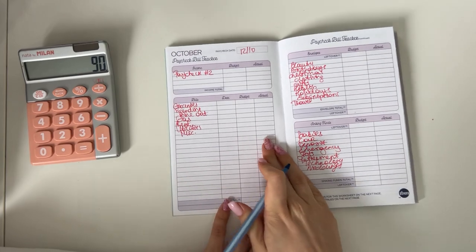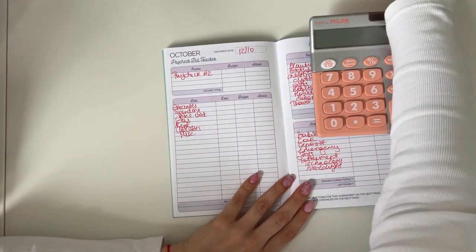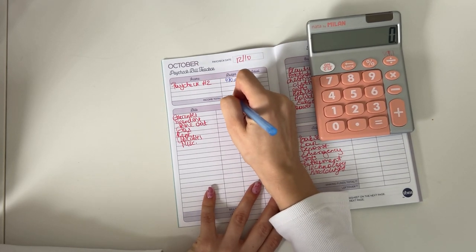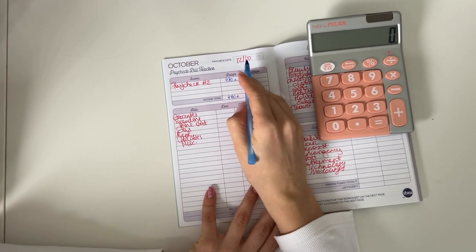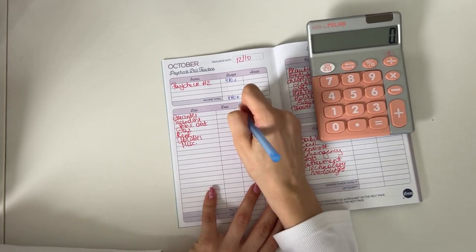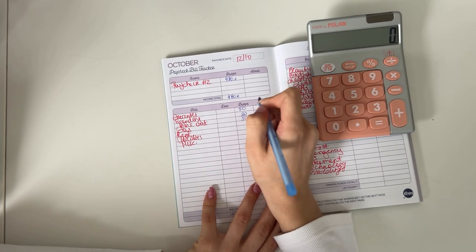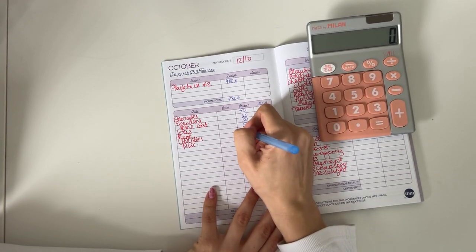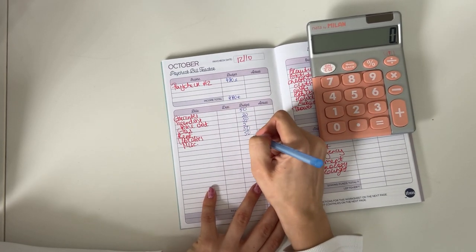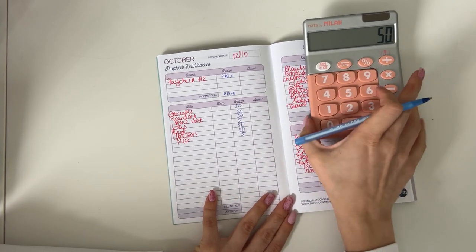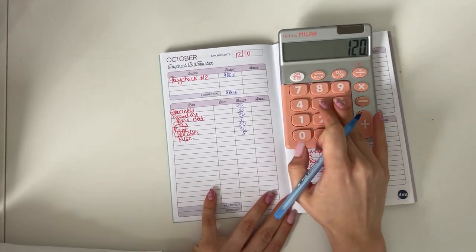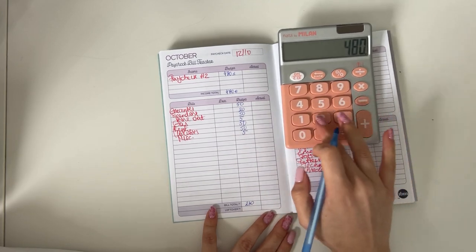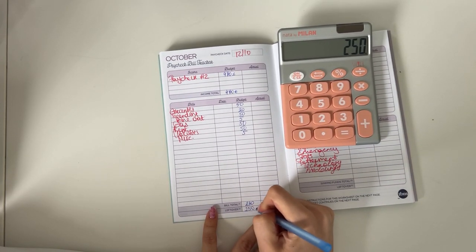Then we can set up paycheck number two for October as well. That's going to be 480 euros. As I'm going to be back on the 15th, I will need money for grocery, spending, and dine out. So I'll just put 50, 20, and 50 as usual. 15 groceries, 20 spending, and 15 dine out. 5 in gas, 50 in rent, 50 in utilities, and 5 in miscellaneous. In total that will be 230 in spending and bills. That leaves us with 250 left to budget.